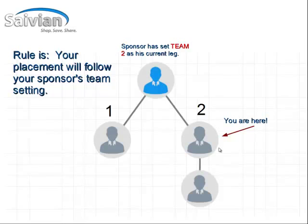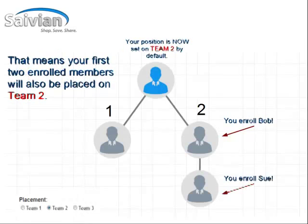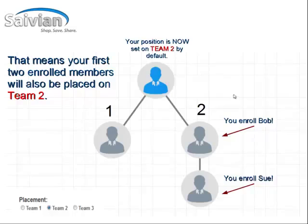you are going to be placed right below them on their Team 2, because that's the leg that they were set on. Now that you're on their Team 2, your first enrolled members are also going to be placed on your Team 2 to keep it consistent. It's almost like building a binary or dual team compensation plan. So your position is now set on Team 2 by default.